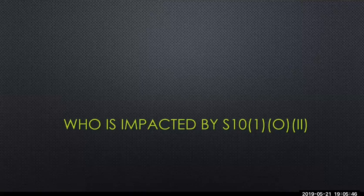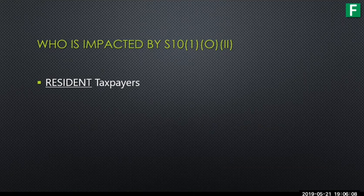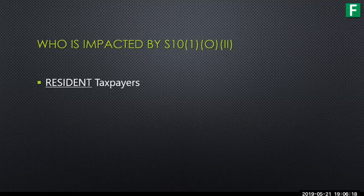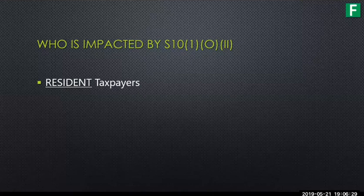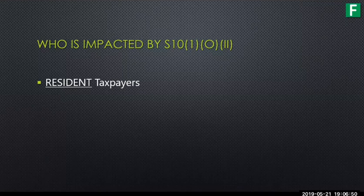Who is impacted by the Section 10102 expat tax exemption changes? The very first thing we need to know is that you have to be a resident taxpayer. South Africa in 2001 went from a source-based to a residence-based tax system. If you are considered a resident for tax purposes — which has nothing to do with your citizenship or where you're permanently living — that country can tax you on your worldwide income and also on capital gains on your worldwide assets.